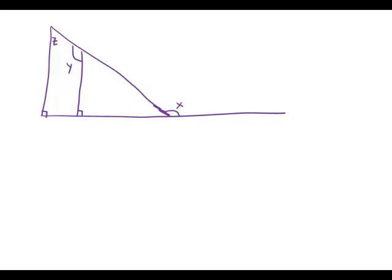In the figure, if z equals 50, then x plus y equals which of the following? Well, first of all, because these two are right angles, it means that these sides have to be parallel.